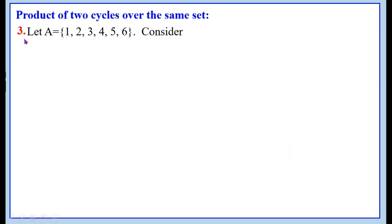The third point: let A equal to the set {1, 2, 3, 4, 5, 6}. That is, the set A contains 6 symbols.